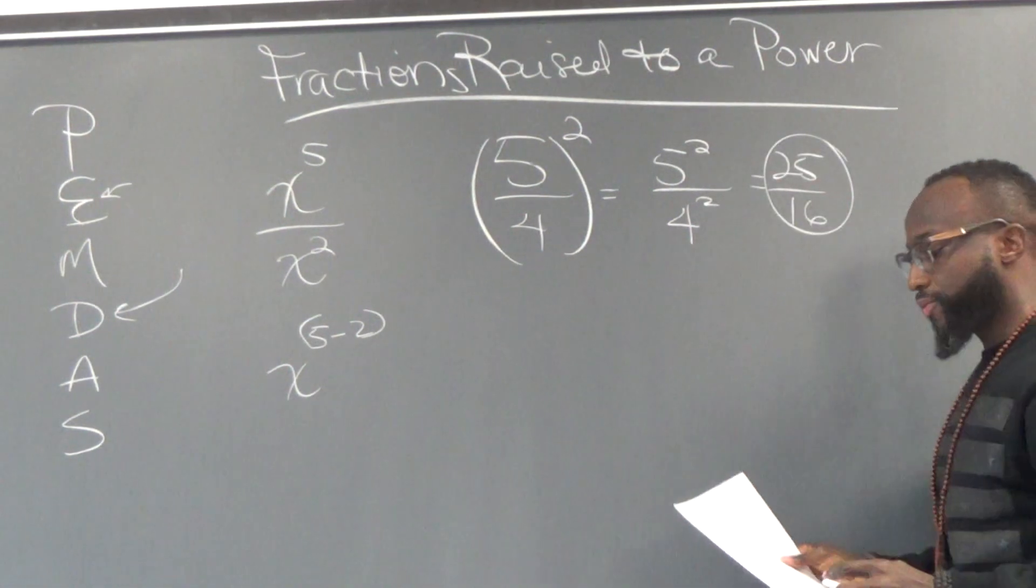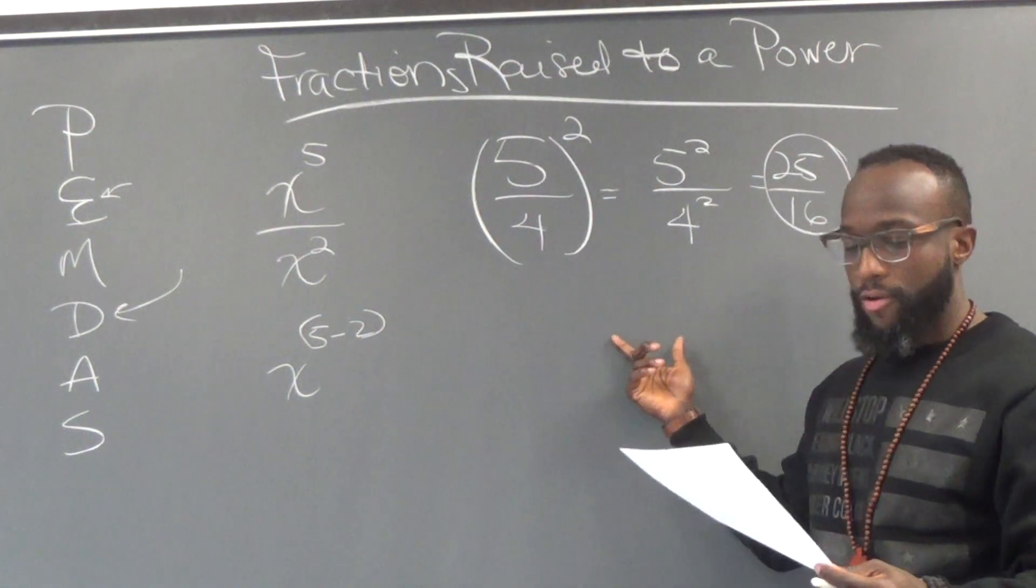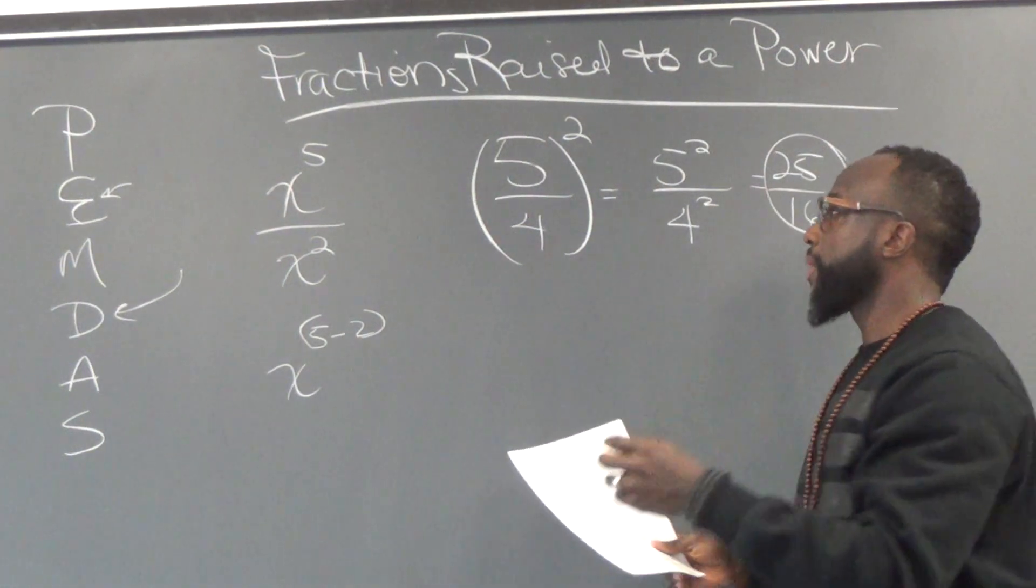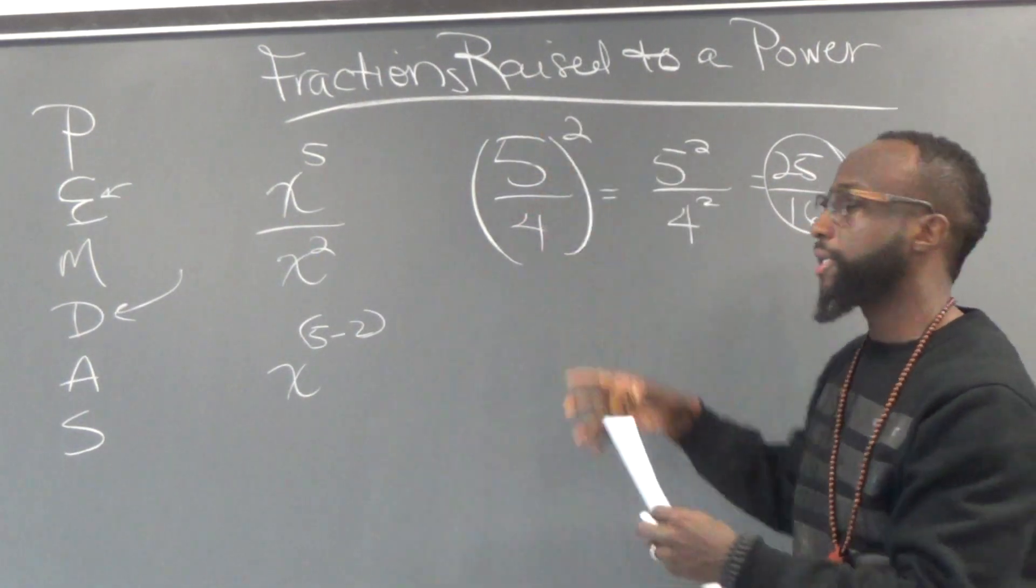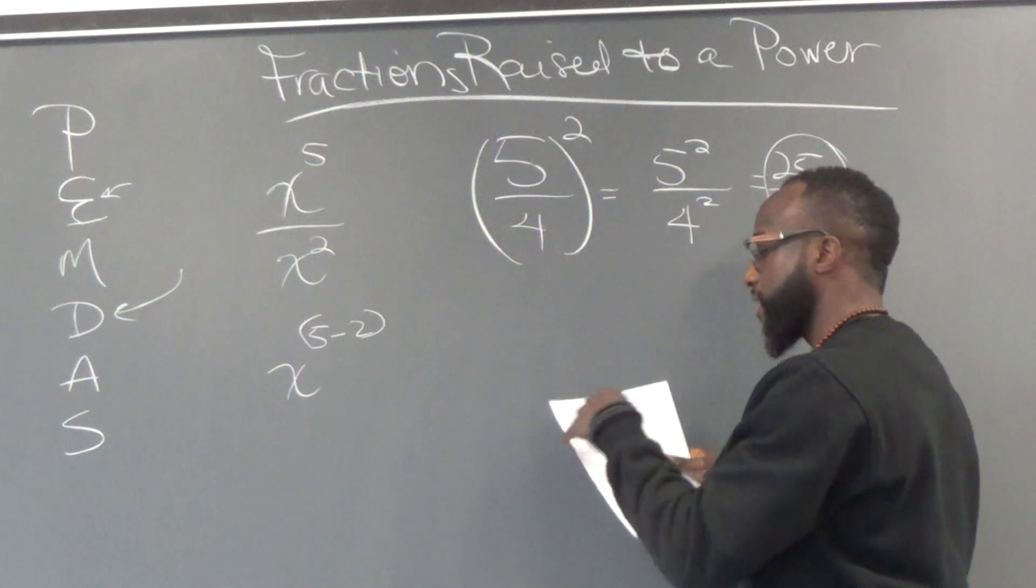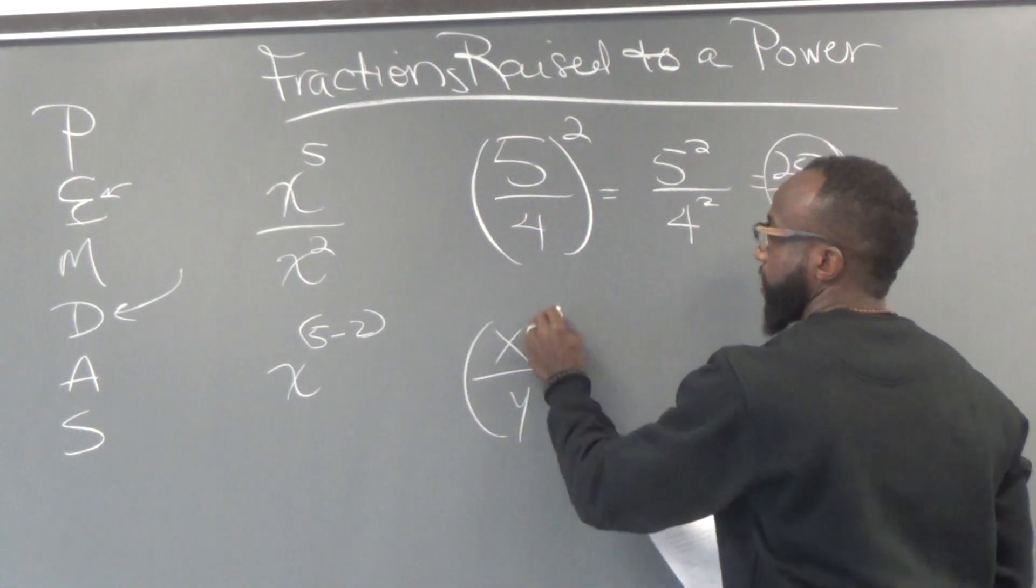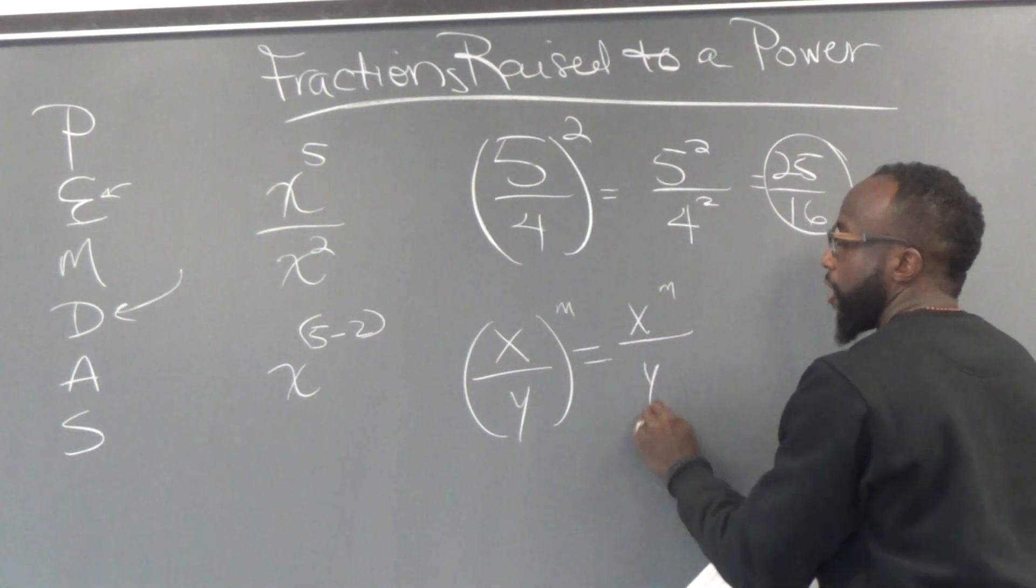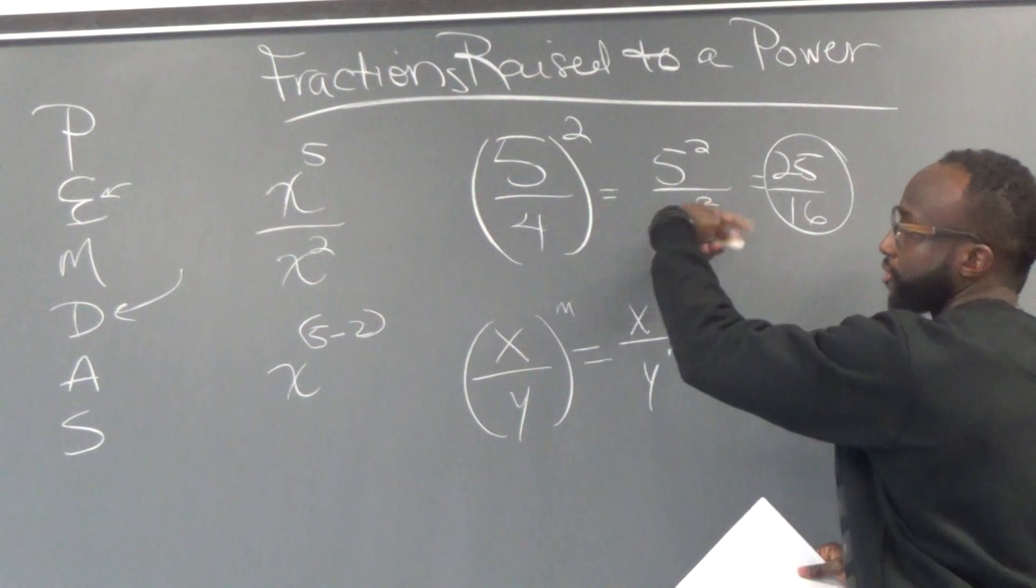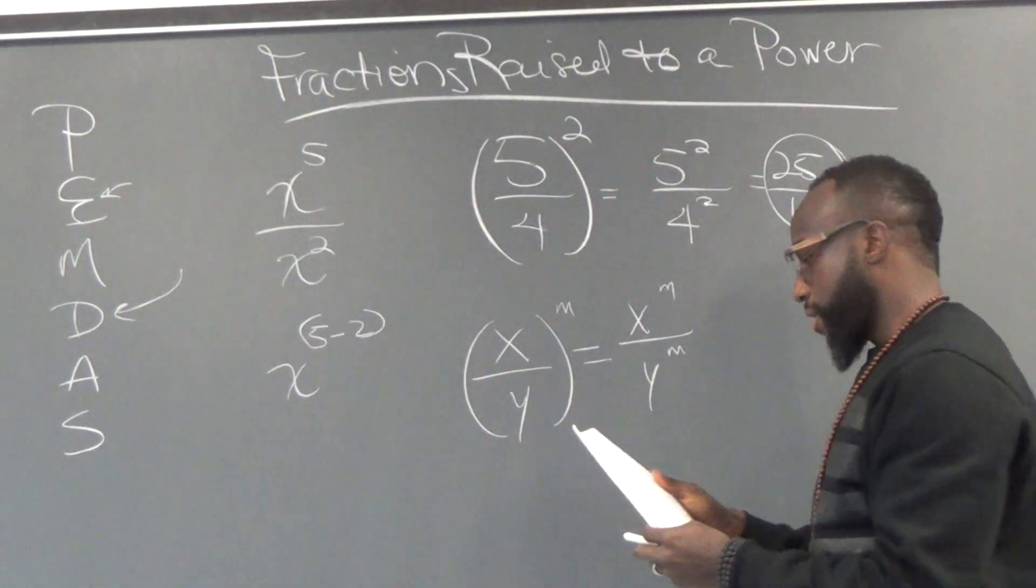And so that's what happens. And so that's the skill. Whenever you have a power raised to a power, you have to multiply that variable. So you have to multiply that exponent into everything. So they have the textbook rule. The textbook rule looks like this. So if you have x to the y raised to the m power, that equals x to the m power over y to the m power. Everybody got that? We good with that so far?